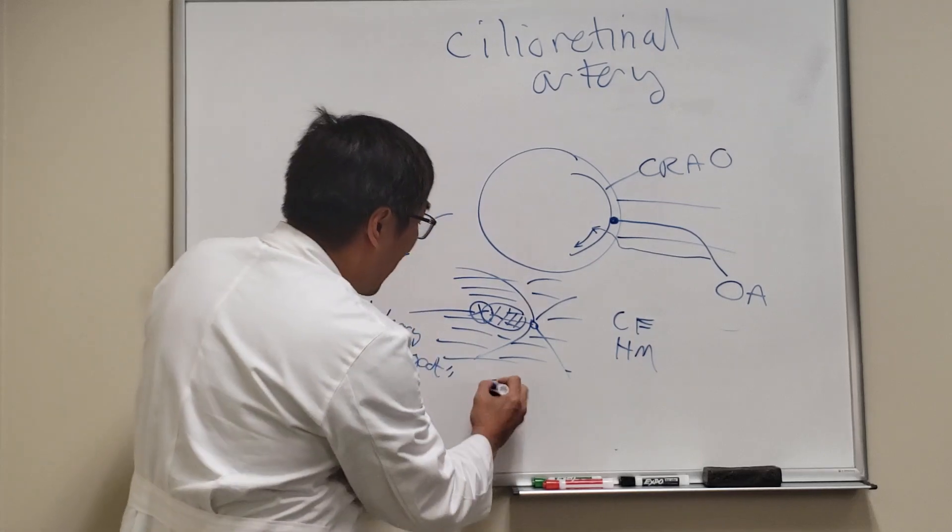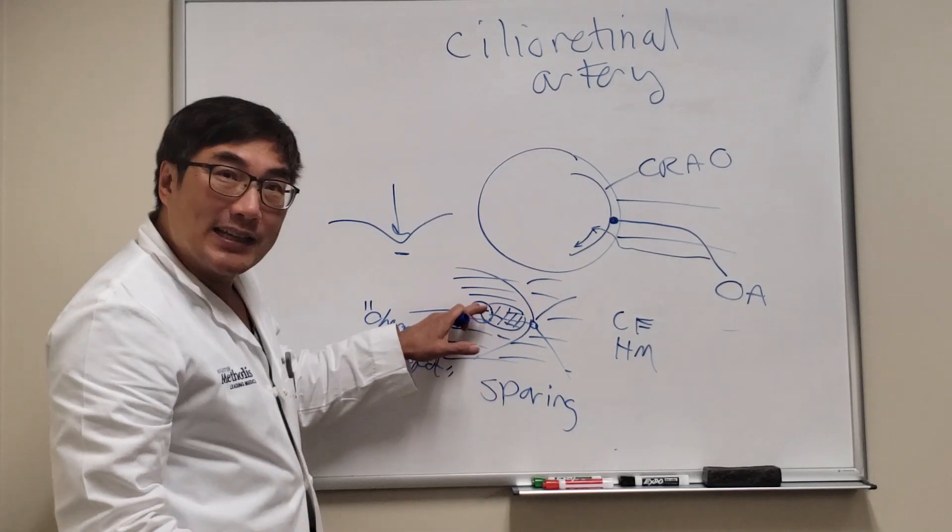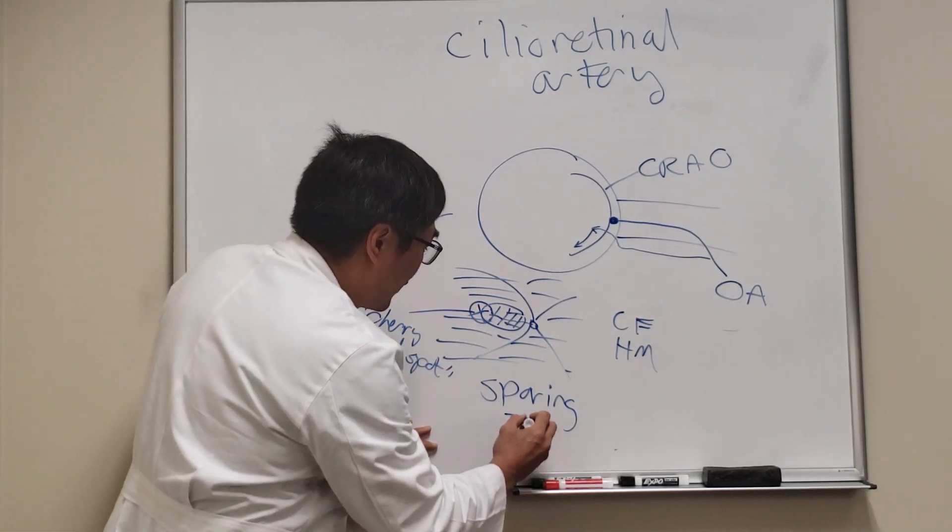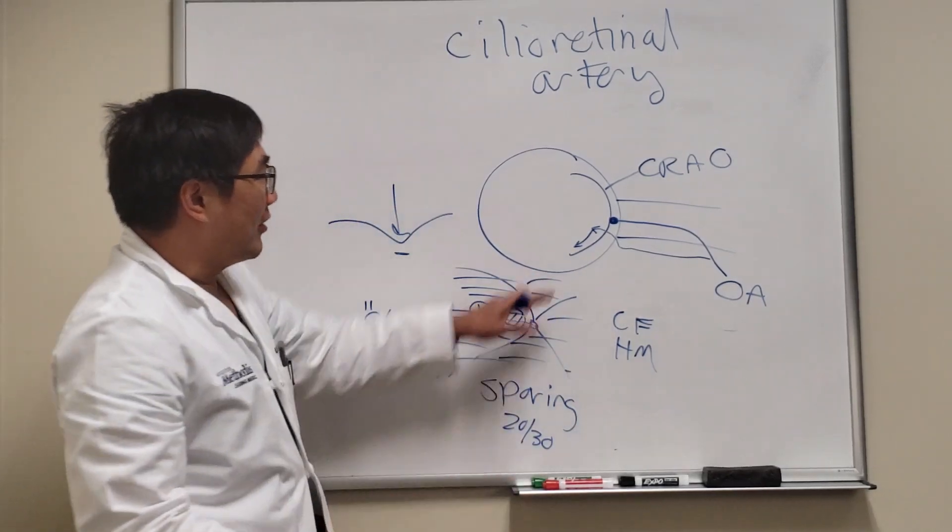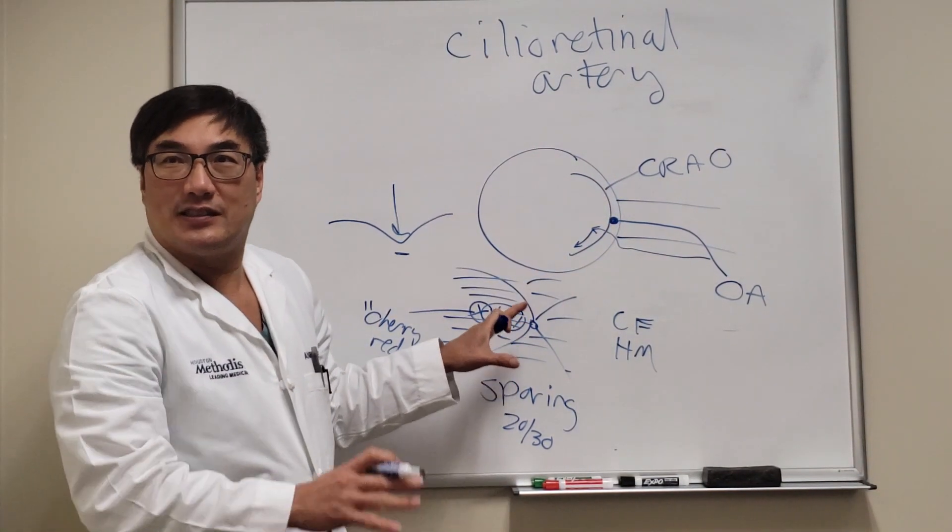We can get sparing of a small patch, often in the macula itself, that might preserve someone's vision to 20/30 even though they've had a central retinal artery occlusion, just because they had this anatomic variant—which is just luck.